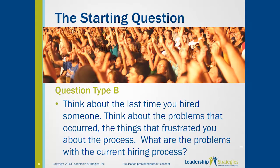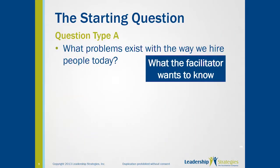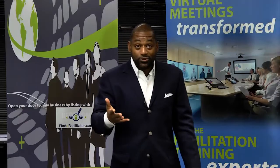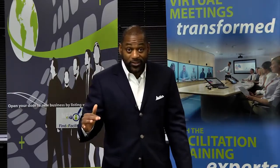But if you ask it the Type A way, which we call what the facilitator wants to know — what problems exist with the way we hire people today — what you're going to get is silence. Why? Because people have to think about their answers. They're trying to create the image you didn't create for them. And that means silence.